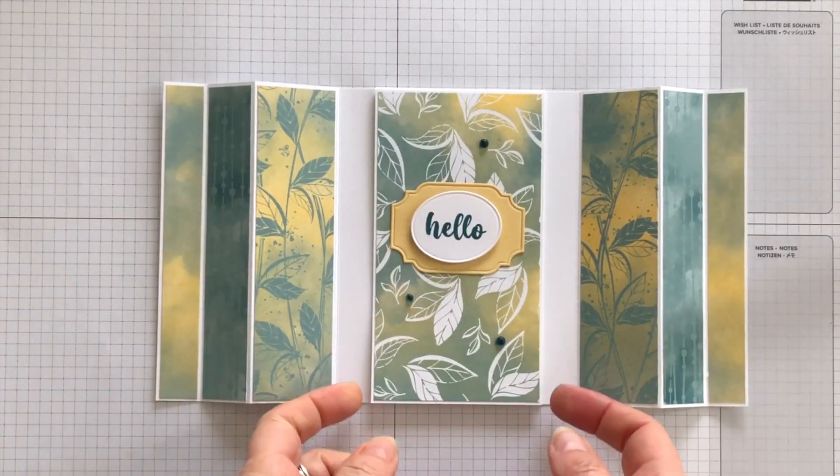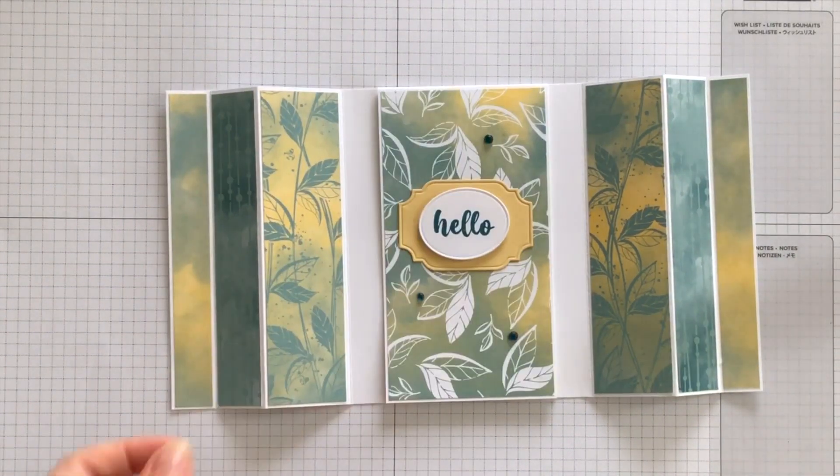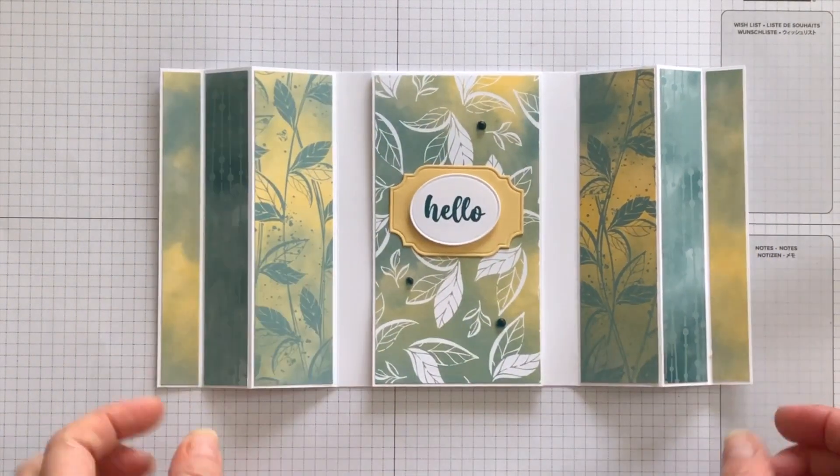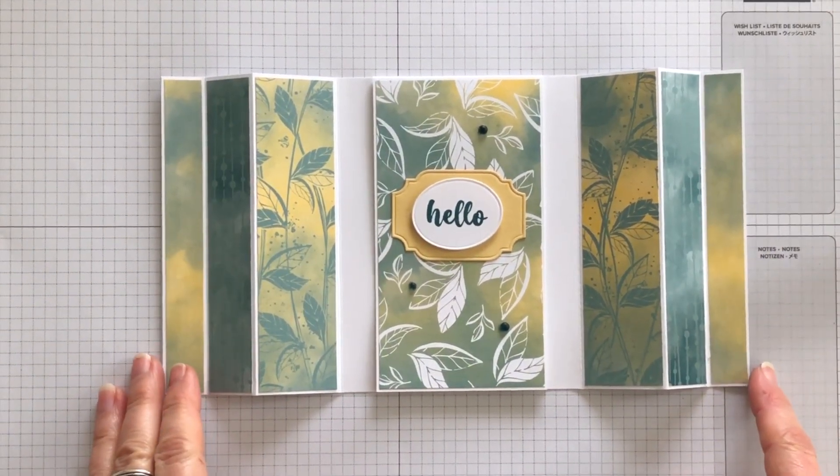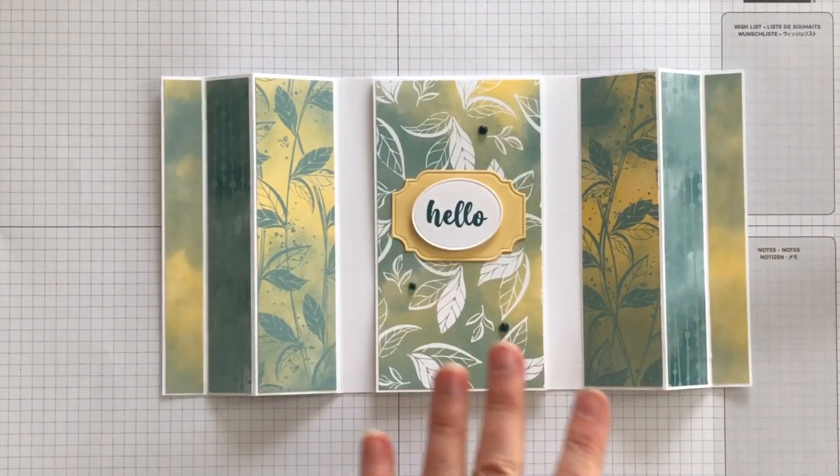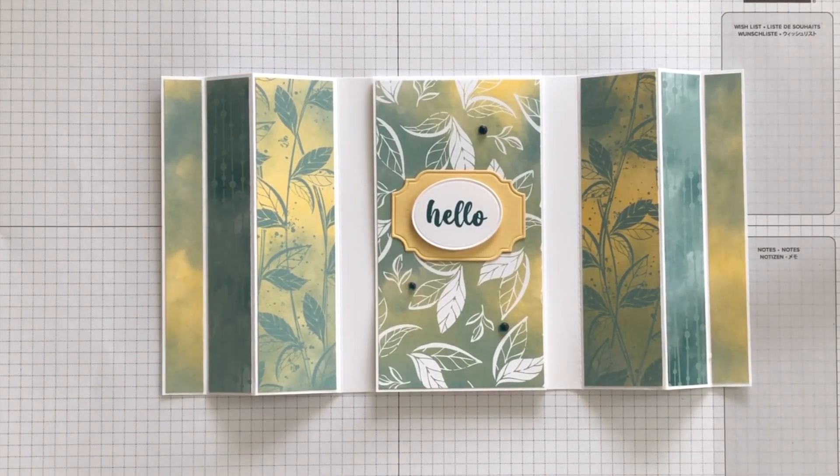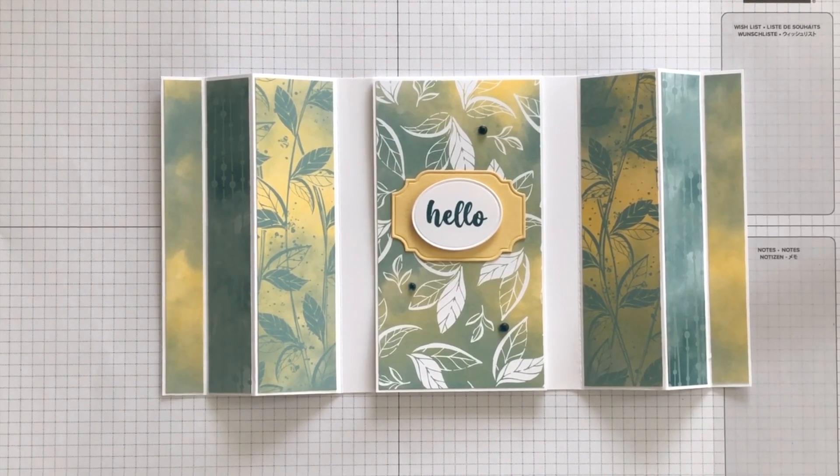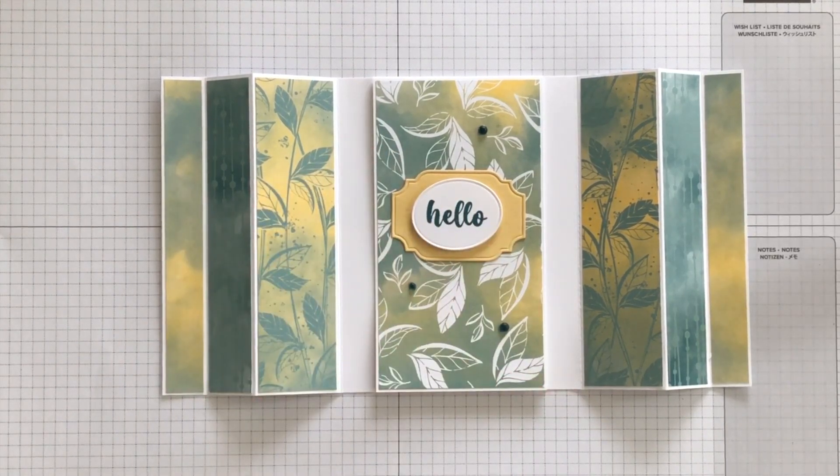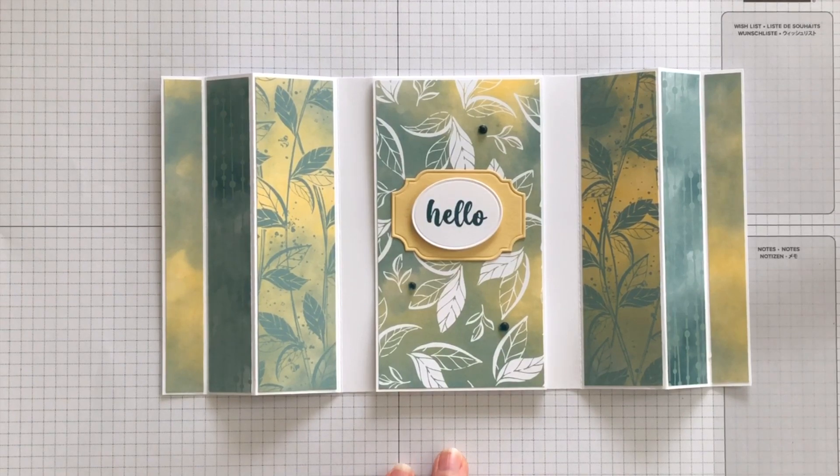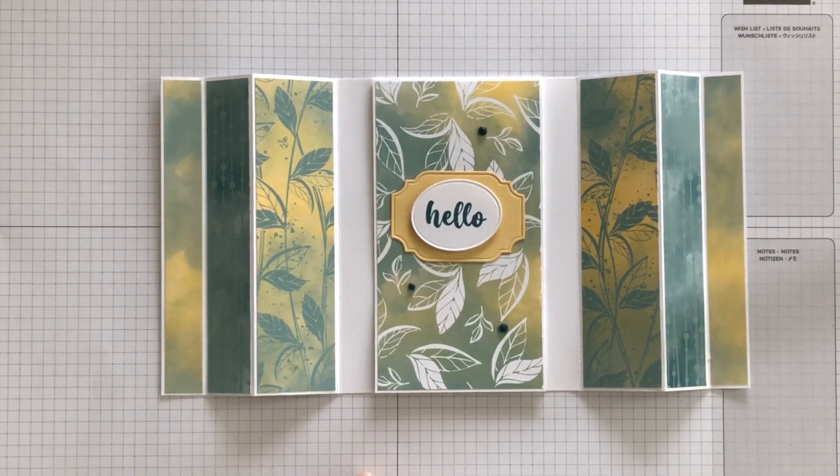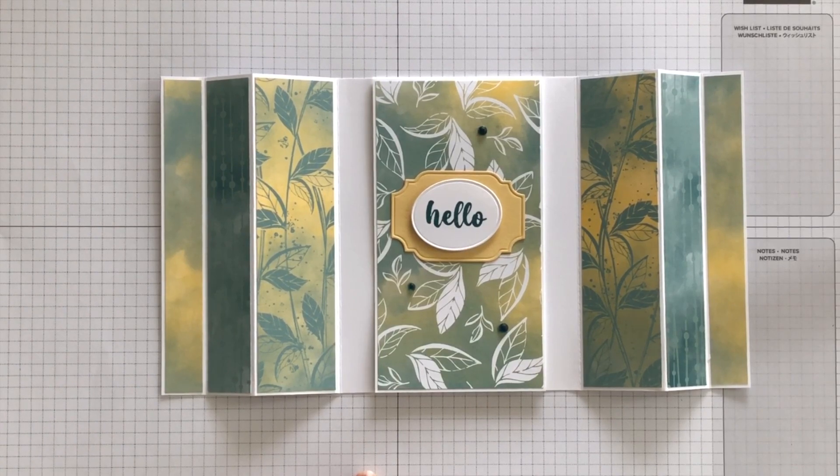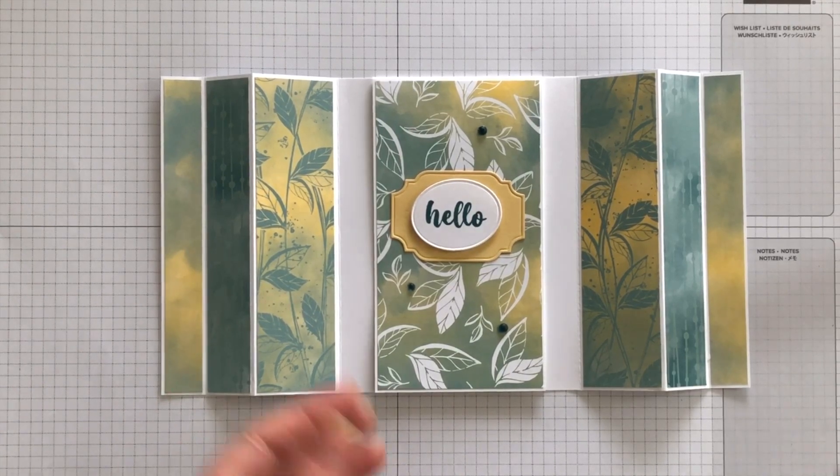The curtain call fun fold card idea is done and ready to mail to somebody special. If you would like a complete listing of the supplies that I used, the measurements, the score lines, all the information that you need to make this card at home, I will link to my blog article in the description box under this video. And if you would like to order the Irresistible Blooms bundle or the Hello Irresistible Designer Series paper, I'll make sure that I include the product ordering numbers over on my blog article as well. I'm Terri, I am nuts about stamping. I'll see you at the next video. Bye for now.